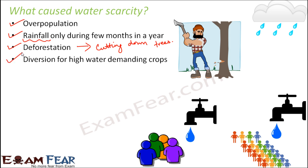Another cause is growing high water-demanding crops. Different crops have different water needs for their growth and production. Some crops need less water and some need more - for example, paddy fields where rice is grown need a lot of water. It is always advisable to grow water-demanding crops only during the season when there is plenty of rain, but often people grow such crops regardless, resulting in water scarcity.